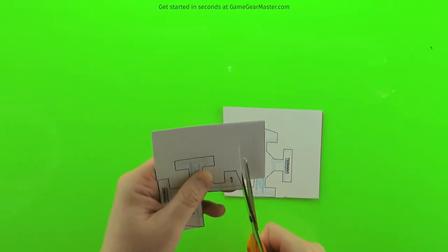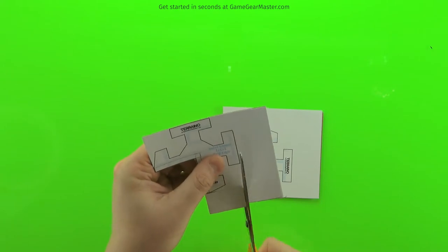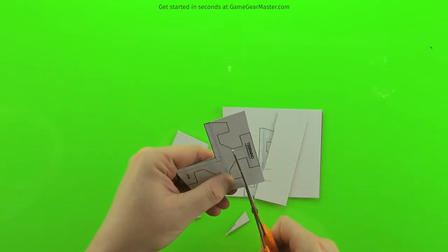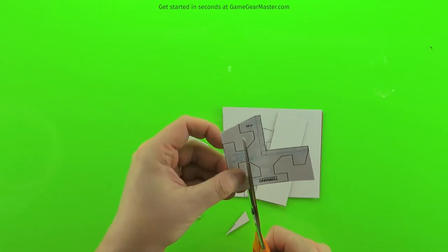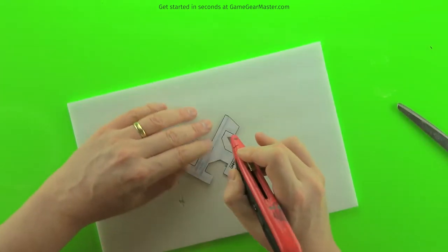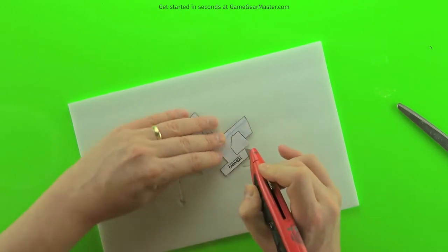If you haven't already, be sure to check out the grid connectors video because grid borders are very similar to grid connectors and we'll be building on what you learned there. And just like we did for the grid connectors, we're going to print out these grid borders and then glue them onto cardboard and cut them out.